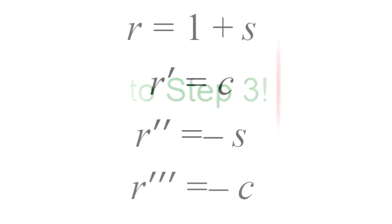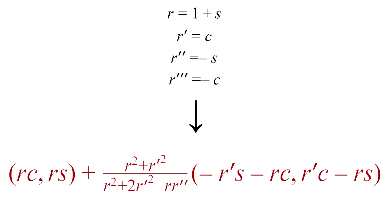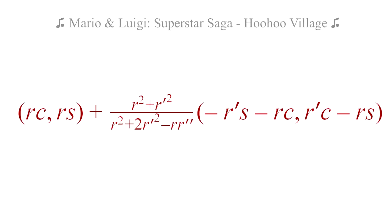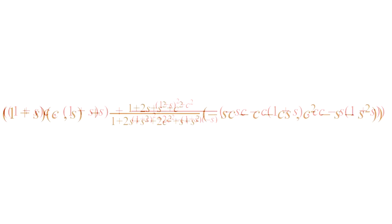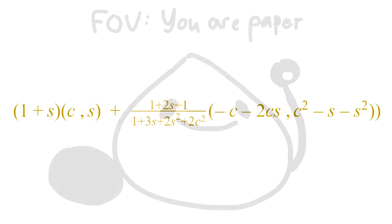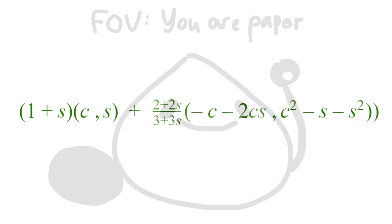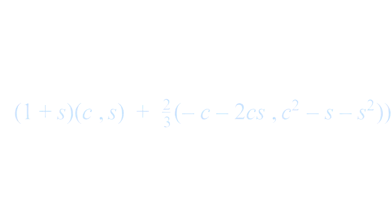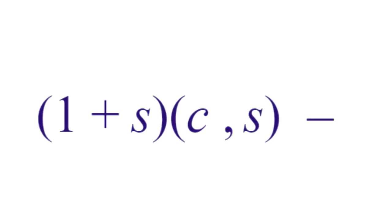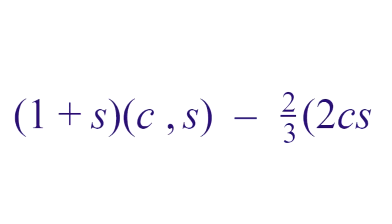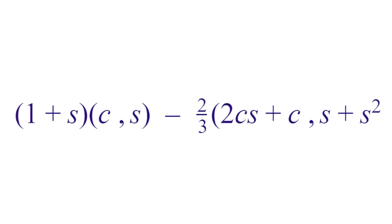Speaking of, let's now take our consecutive derivatives and plug them into this long parameter that represents the evolute. By doing so, the evolute parameter will look like this. After another genocide towards mere paper kind, the parameter reduces to 1 plus s, c comma s, minus 2 thirds times 2 c s plus c, comma s plus s squared minus c squared.